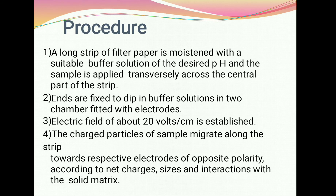Procedure: A long strip of filter paper is moistened with a suitable buffer solution of the desired pH. The sample is placed transversely across the central part of the strip. The ends are fixed to dip in the buffer solution in two chambers fitted with an electrode.